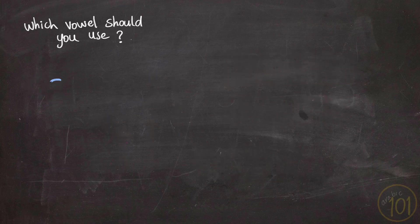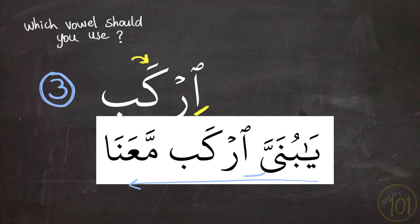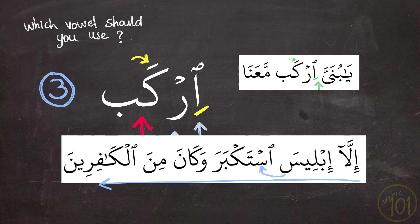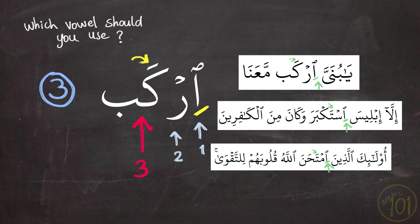Next, if the third letter has Fath, then Hamzat Wasl will still get Kasra — like in these examples. Each of these words has Fath on top of the third letter, and therefore the Hamzat Wasl will still receive Kasra under it.